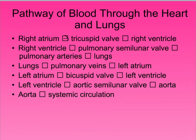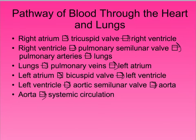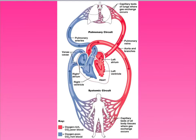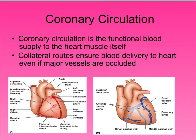Following the blood flow pathway: the right atrium goes through the tricuspid valve to the right ventricle, which goes through the pulmonary semilunar valve to the pulmonary arteries and into the lungs to pick up oxygen. Blood returns from the lungs through the pulmonary veins into the left atrium, then through the bicuspid (mitral) valve into the left ventricle, through the aortic semilunar valve into the aorta, and into systemic circulation to the rest of the body. Arrows in the diagram show the direction of blood flow.